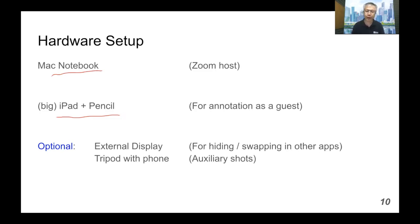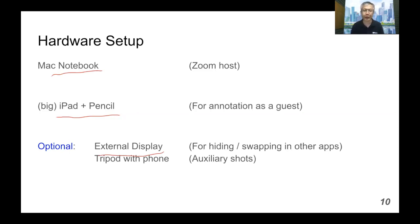Optionally, if you're trying more advanced setups, you can try to have an external display. That's very helpful for hiding and swapping in other applications that you want to share content with, or a tripod with a phone for auxiliary shots — like when you're going to take pictures or videos of yourself typing or annotating.